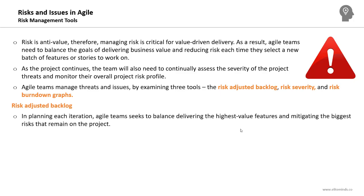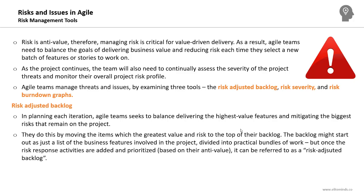Before talking about the risk-adjusted backlog, the product backlog is a document where the product owner lists all the features the agile team should develop, prioritized based on anticipated value. In planning each iteration, agile teams seek to balance delivering the highest value features and mitigating the biggest risks that remain on the project. They do this by moving items with the greatest value and risk to the top of their backlog.